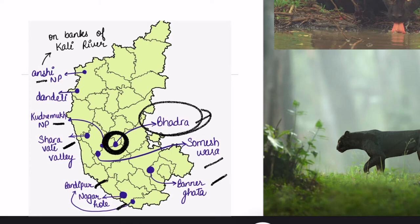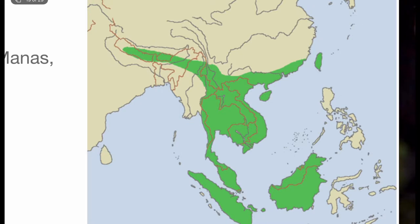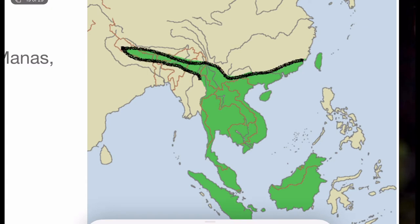Next is the clouded leopard, which we have discussed before. The clouded leopard is found in Kaziranga and Manas. Looking at the map, here is Nepal, here is Bhutan, and the green shaded area on this map is the residence of the clouded leopard.